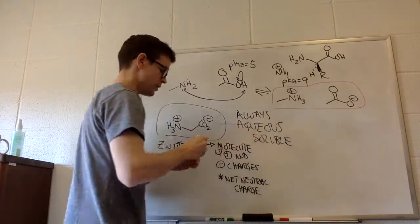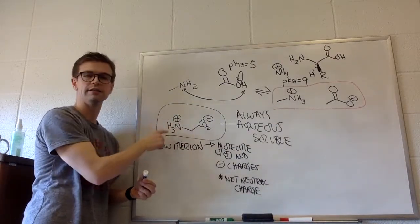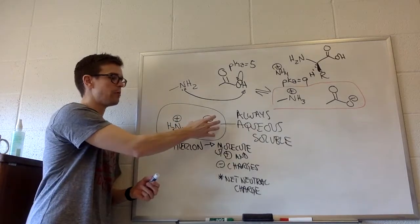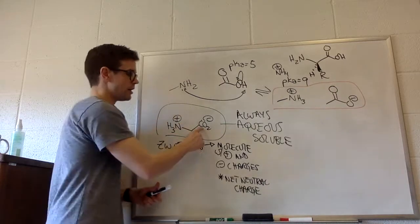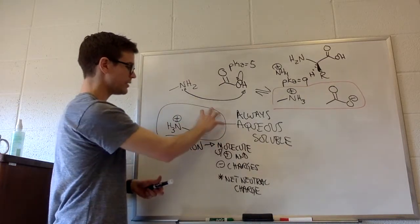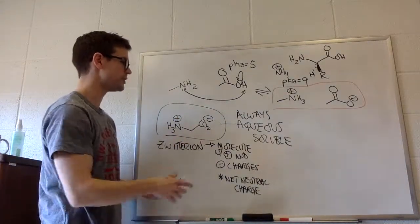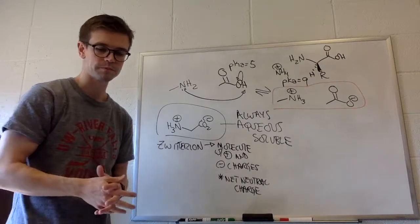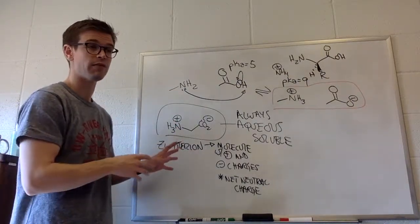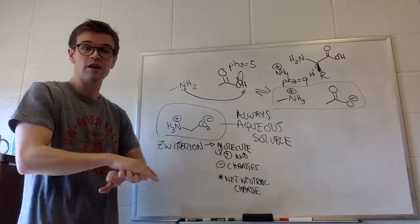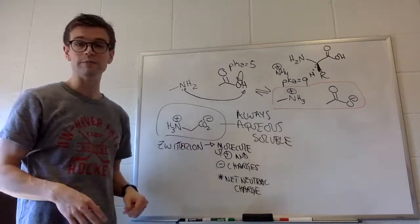If we treat this amino acid with a base, it will deprotonate the NH3 to make that neutral, but the carboxylate would still be charged at that point. If we treat this molecule with an acid, the carboxylate would protonate making this neutral, but this would still be charged. So there's no way to make this a neutral species, which means it's always aqueous soluble. And that has an important impact on our inability to purify these by extraction techniques. We can't purify them by extraction techniques because they will always be aqueous soluble.